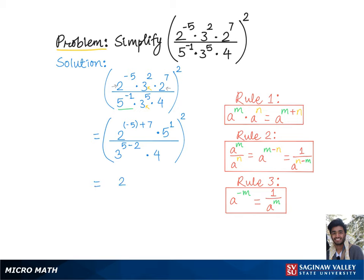This gives 2^2 times 5^1 equals 5, over 3^3 times 4, all squared. Simplifying further: 2 squared is 4 times 5 over 3 cubed is 27 times 4, all squared.